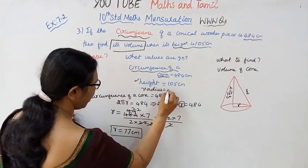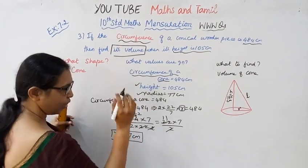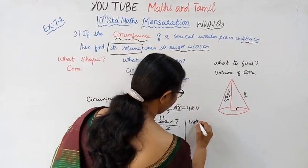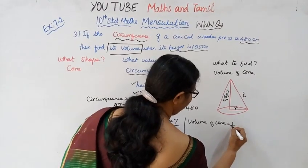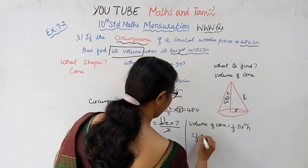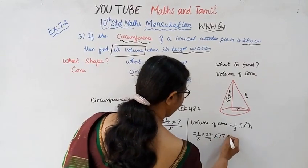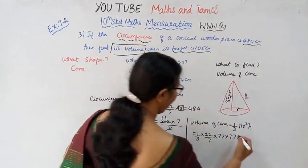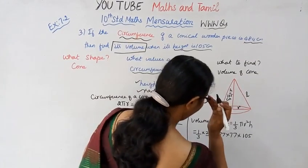Radius is 77 cm and height is 105 cm. Now find its volume. Volume of cone = one-third pi r squared h. That is equal to one-third into 22 by 7 into 77 into 77 into 105.